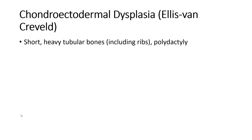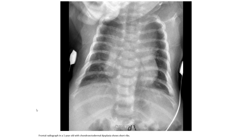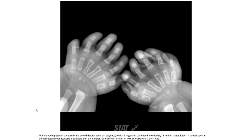Chondroectodermal dysplasia (Ellis-van Creveld) features short heavy tubular bones, polydactyly, and short stature. Frontal radiograph of a newborn with chondroectodermal dysplasia shows shortening. The PA hand radiograph in the same patient shows bilateral postaxial polydactyly with six fingers on each hand. Polydactyly of the hands and feet is usually seen in chondroectodermal dysplasia and can have limited prognosis in children with short stature.